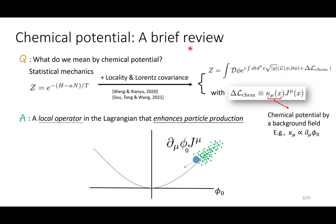So what is the chemical potential? In statistical mechanics, it's a Lagrange multiplier introduced in the grand canonical ensemble. By using locality and Lorentz covariance, we can upgrade this into field theory and write it as a local term, local operator in Lagrangian that takes this form, which is kappa_mu times J_mu, where J_mu is the matter current and kappa_mu is the chemical potential provided by a background field.